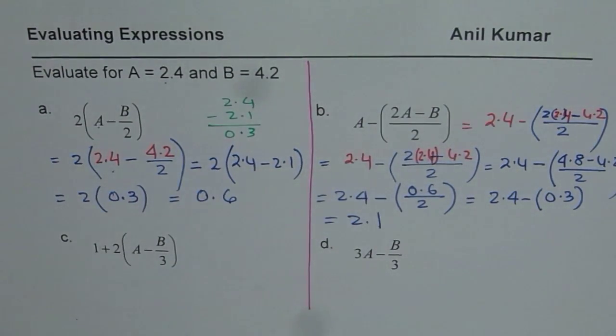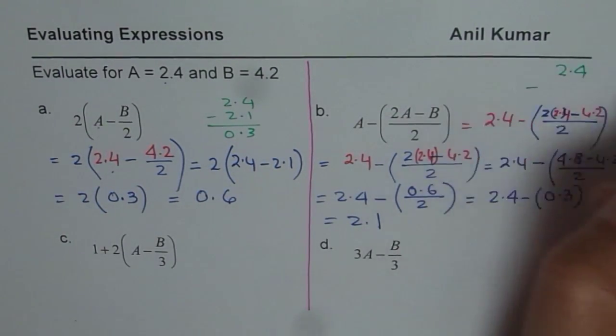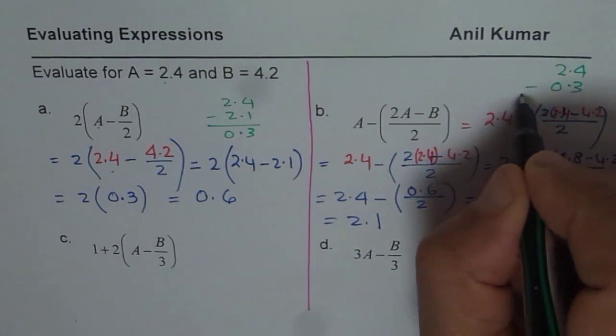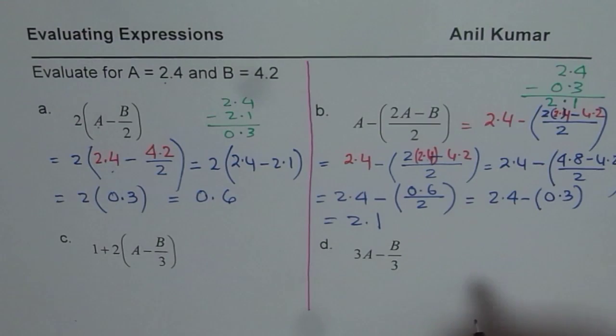I know this could be a bit tricky for some of you, so you can do it on the side also. You can do 2.4 take away 0.3, and then align the decimals to get the value. Do you see that? So likewise, you can practice doing such questions. These two are for you to practice.